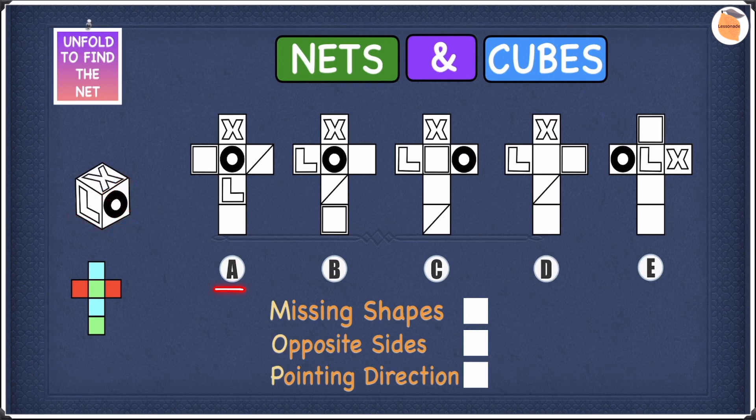So let's start with A. In A we have the L shape, we have the O shape and we have the X shape. So that's fine and we can move on to B. In B we have the O shape, we have the X and the L shape so they're also fine. Let's move on to C. In C we have the X shape, we have the L shape and we have the O shape. So that's fine and let's move on to D.